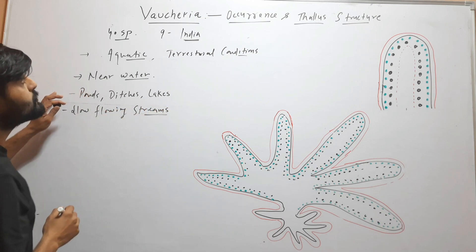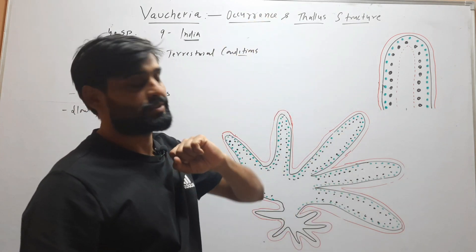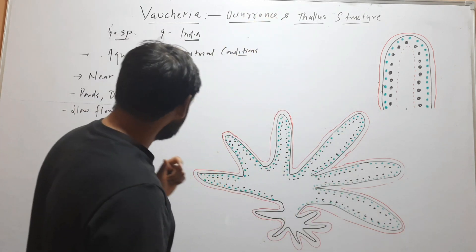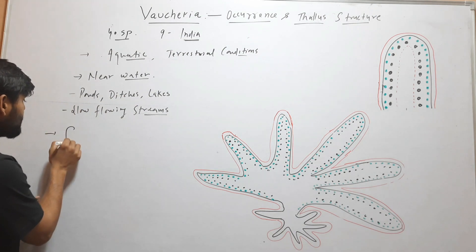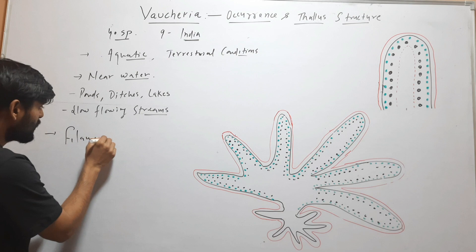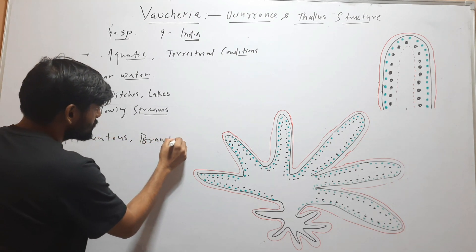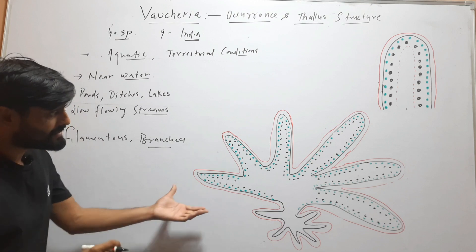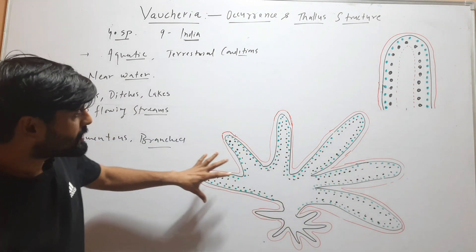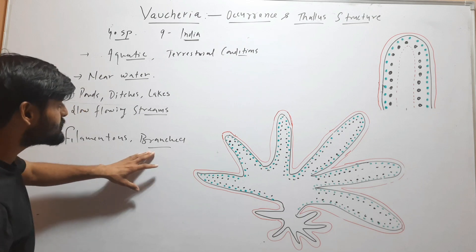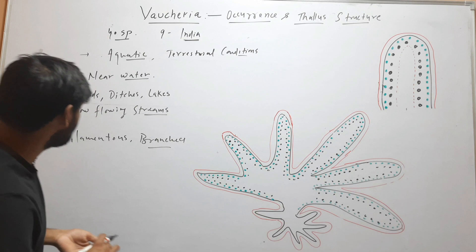This is the occurrence of Vaucheria. Now coming to thallus structure — its thallus is simply filamentous and branched. You can see that this thallus is made of filaments, and it is multi-filamentous. This thallus is much branched.